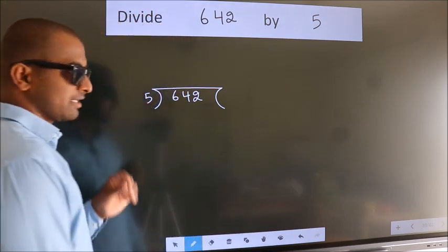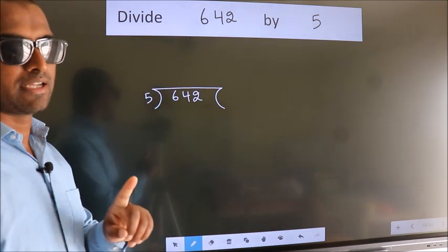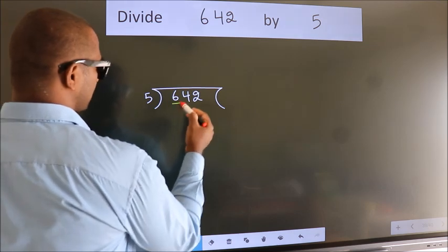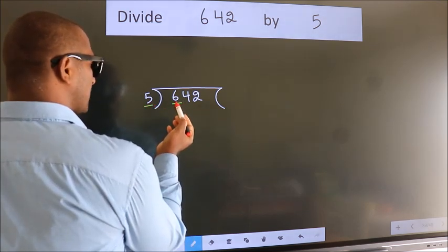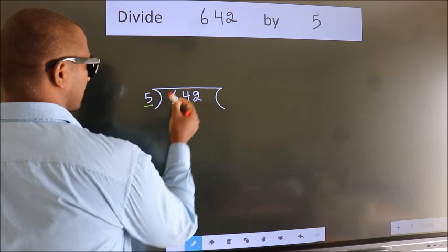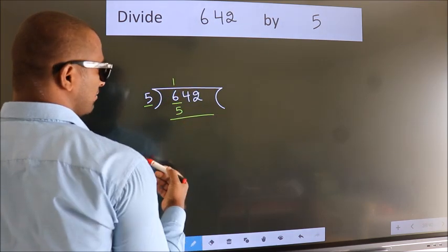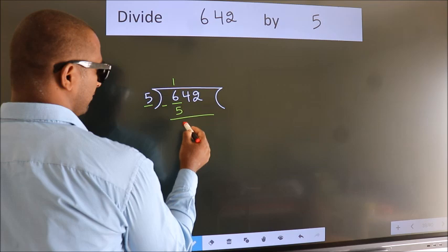This is your step 1. Next, here we have 6, here 5. A number close to 6 in 5 table is 5 once 5. Now, we should subtract. We get 1.